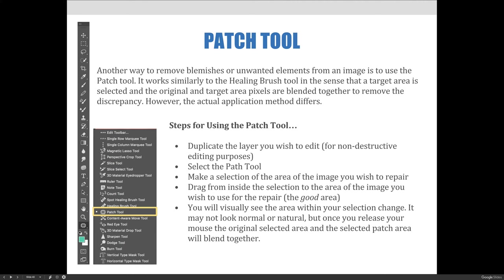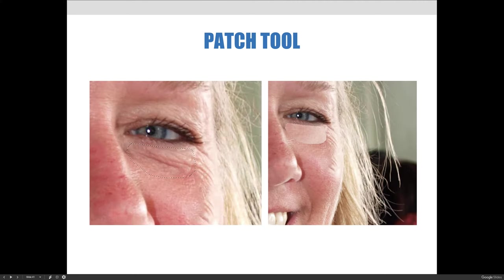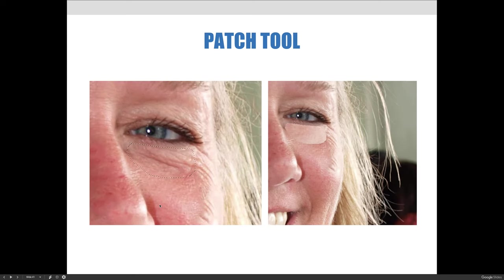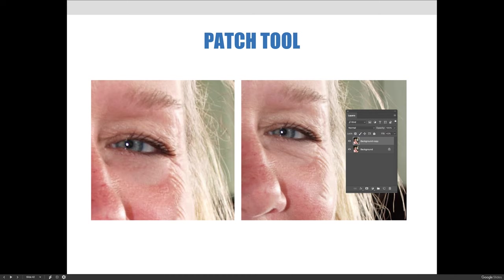From inside the selection you click and drag, and the background of your image moves into the selection. You keep moving around until the good area you want to blend with the bad area is sitting over the selection. For example, to remove wrinkles under someone's eye, you make a rough selection of the creases, then click and drag from within the selection until you get a smooth piece of skin sitting on top. When you let go, it blends the new pixels with the old pixels.